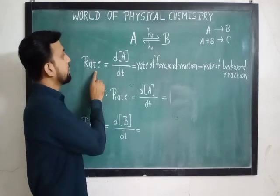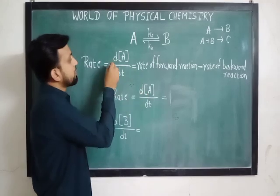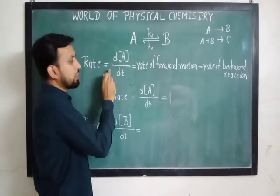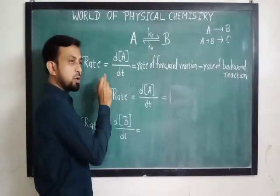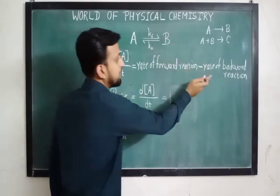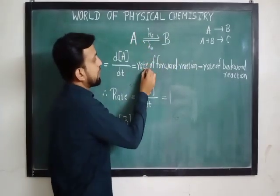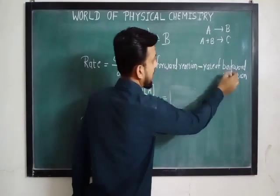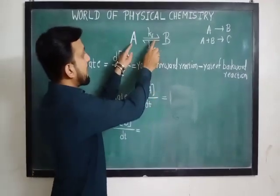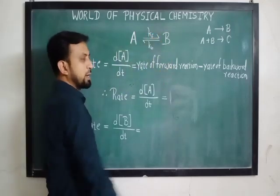The rate is equal to the change in concentration of A with respect to time t. Here we do not write a negative or positive sign as we regularly would for reactant or product, because A is both forming and disappearing. That magnitude of sign is written on the right-hand side. For such a reaction: rate of forward reaction minus rate of backward reaction.